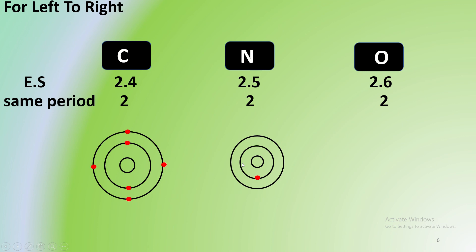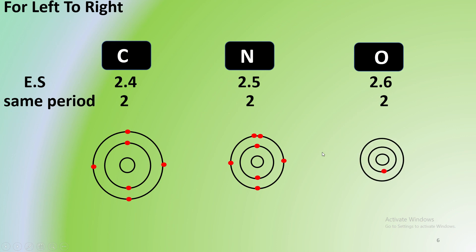The nucleus holds the electrons. For a configuration of 2,6, we will see that the electron is a new outer electron. The nucleus-electron attraction increases, and so ionization energy increases from left to right.